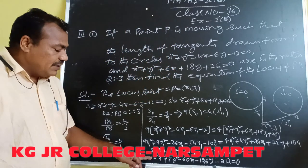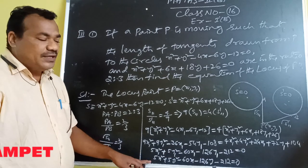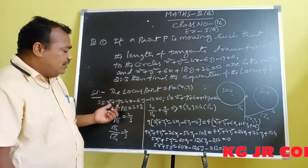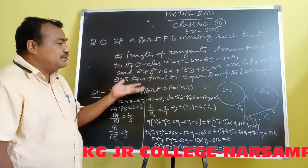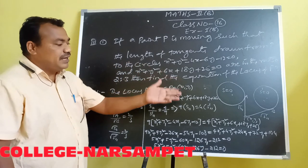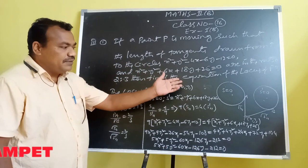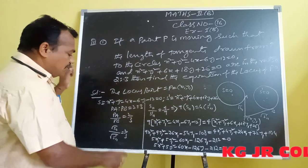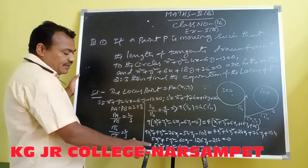So the required equation of P for the given condition — the ratio of the lengths of the tangents drawn from point P to both circles is 2:3 — is 5x² + 5y² - 60x - 126y - 212 = 0.